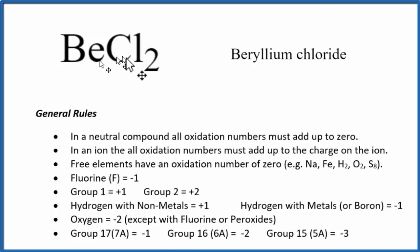First thing we want to note is that BeCl2, that's a neutral compound. There's no plus or minus after it like we see with ions. So all the oxidation numbers, they're going to add up to zero.